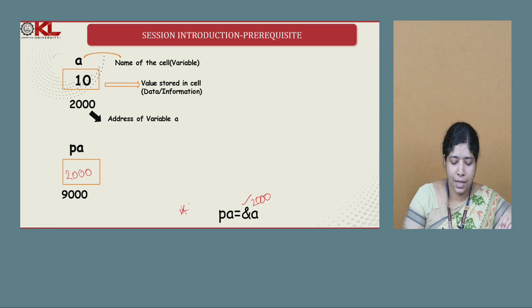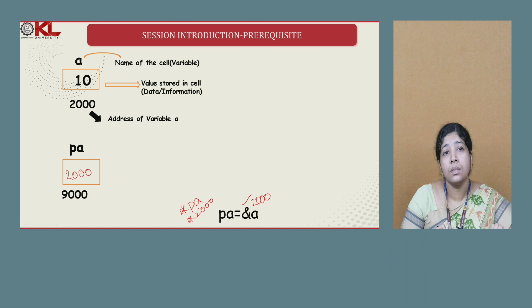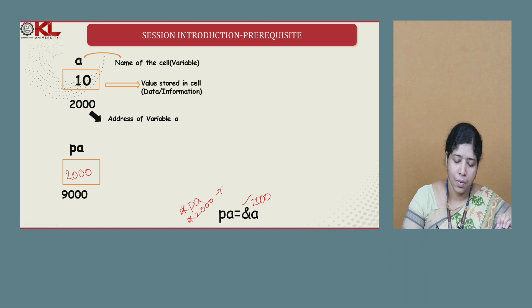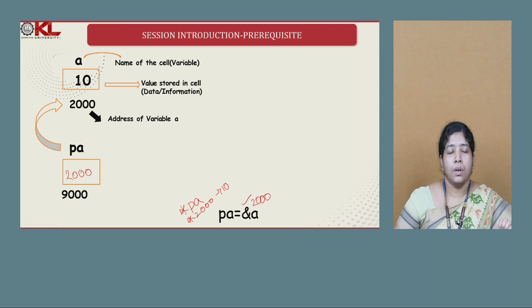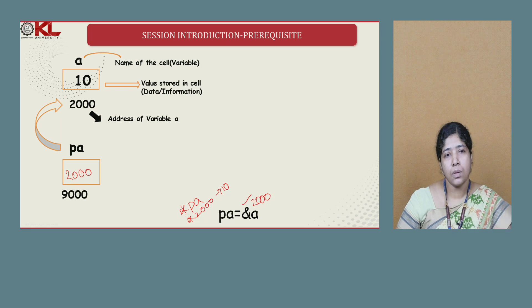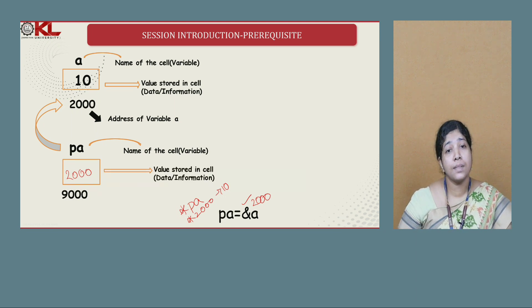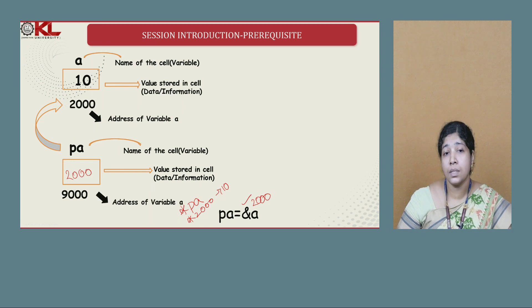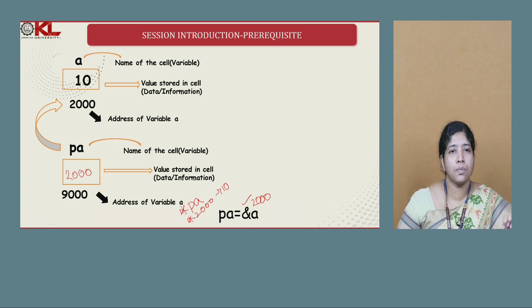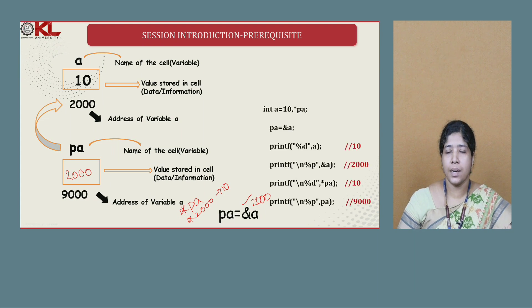The moment you write asterisk PA, it goes to the location at address 2000. At location 2000, the value available is 10 — so indirectly we are accessing the value 10. So the statement is: PA = &A. The moment you write this, 2000 is stored in PA and it indirectly accesses variable A. Now let us write a small snippet to show the difference between accessing a normal variable and a pointer variable.